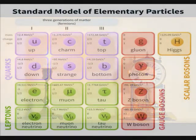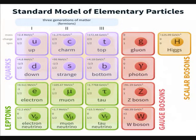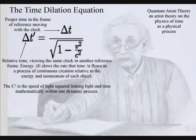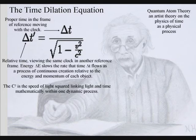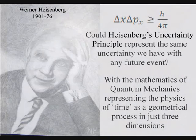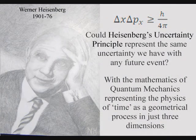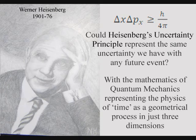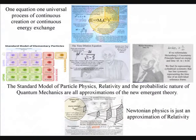But such a theory would have to be based on the standard model of particle physics. It would also have to contain the time dilation of Einstein's relativity and the probabilistic nature of quantum mechanics. All these theories would have to be an approximation of the new emergent theory.